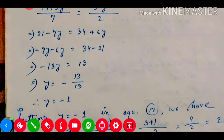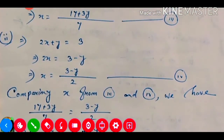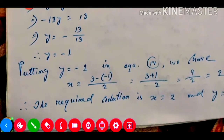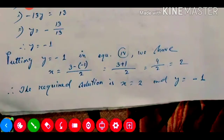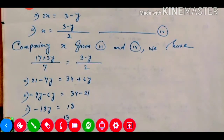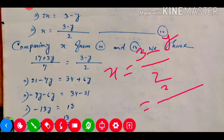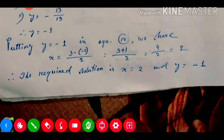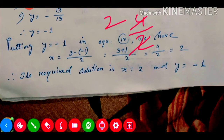Now we put y equals minus 1 into equation number four to find x. Equation number four gives x equals 3 minus y divided by 2. Substituting y equals minus 1: x equals 3 minus (minus 1) divided by 2, which is 3 plus 1 divided by 2, giving 4 divided by 2 equals 2. Therefore the required solution is x equals 2 and y equals minus 1.